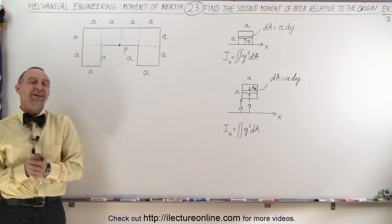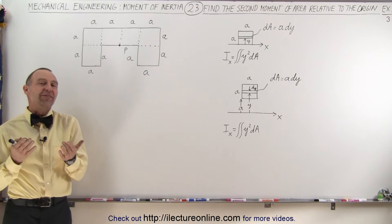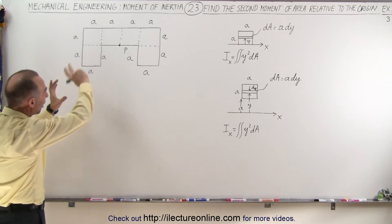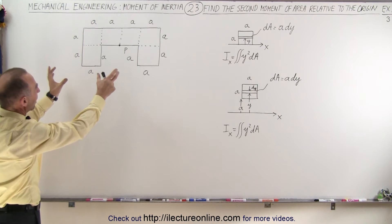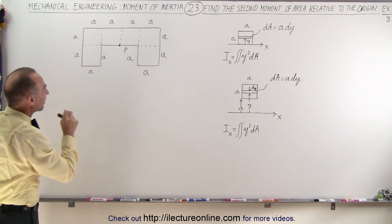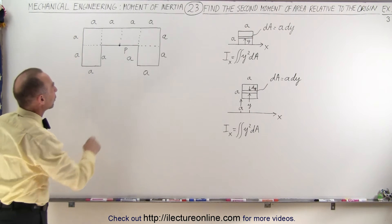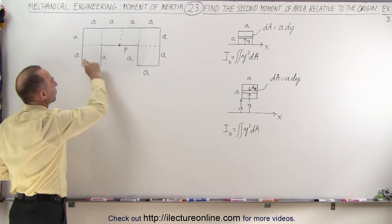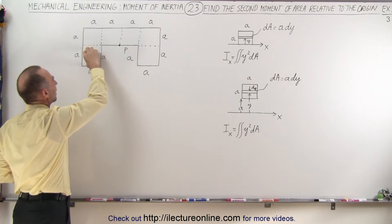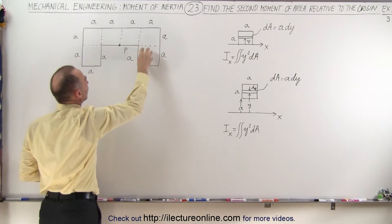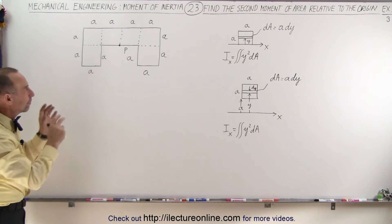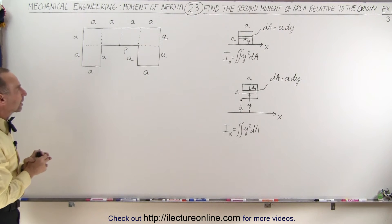Welcome to ElectronLine. In our third example, we're going to take this upside-down U-shaped object and try to find the second moment of area with respect to point P. You can see here how it's shaped and how you can actually divide it into six square regions of that particular object.